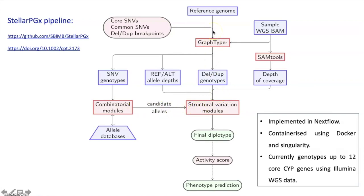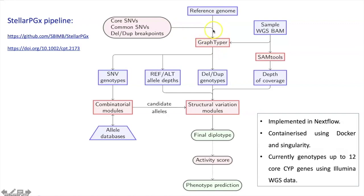Regarding the graph-based variant detection: most of the time variant calling is best when using a linear reference genome. However, for PGX we use a tool called graph-typer, which takes known variants and augments them to the reference genome to form a graph structure, then realigns the reads to that graph structure. By doing that, it improves the read alignment quality and also the variant calling confidence.